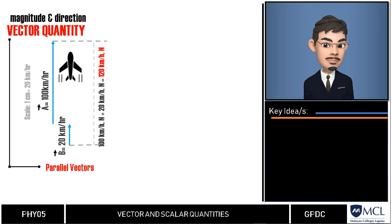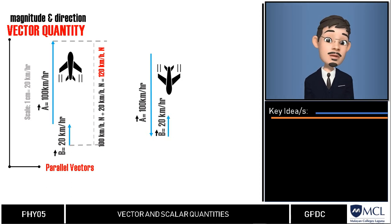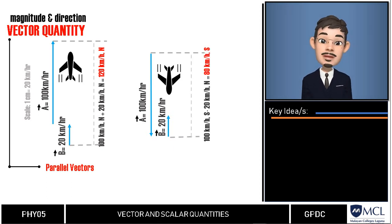Suppose that the airplane makes a U-turn and flies into the wind rather than with the wind. The airplane still flying at 100 km per hour and opposite to it is wind velocity at 20 km per hour. In this case, the total velocity of the airplane will be decreased to 80 km per hour because it is flying now against the wind. Such vectors are called anti-parallel vectors.